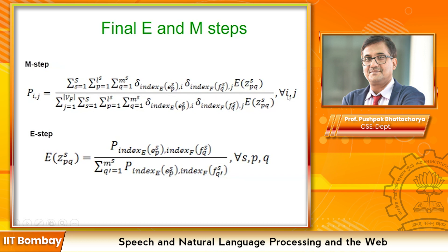From rearranging terms I get P_IJ equal to (1/lambda_I) times the triple sigma expression with the Kronecker deltas multiplied by E[Z_SPQ]. Applying the constraint that sum over J from 1 to VF of P_IJ equals 1, I obtain the M-step expression. The E-step gives E[Z_SPQ] in terms of the parameter P indexed by Index_E and Index_F, divided by a normalizing factor, for all possible S, P, and Q. This mathematics follows very systematically step by step.